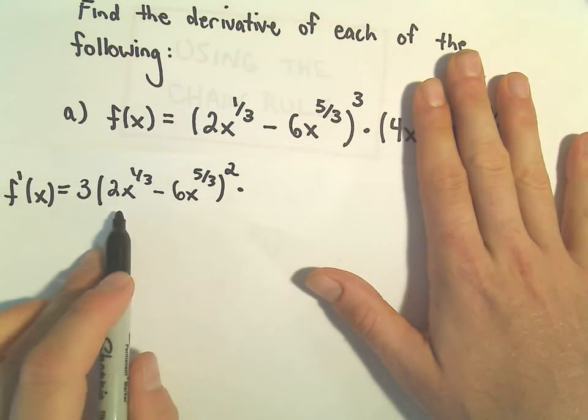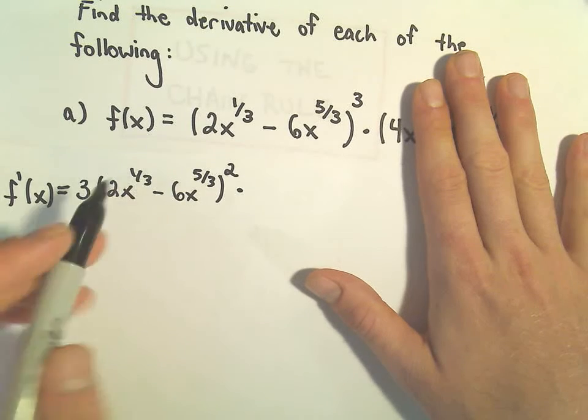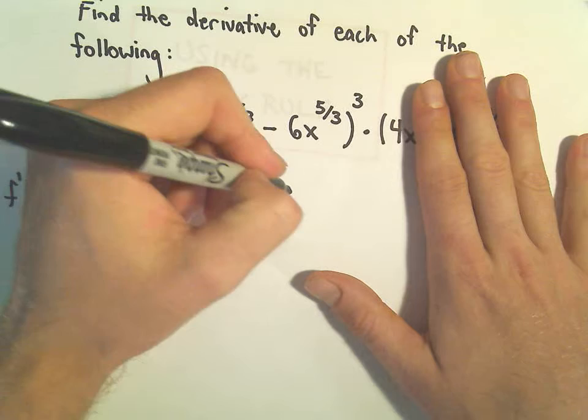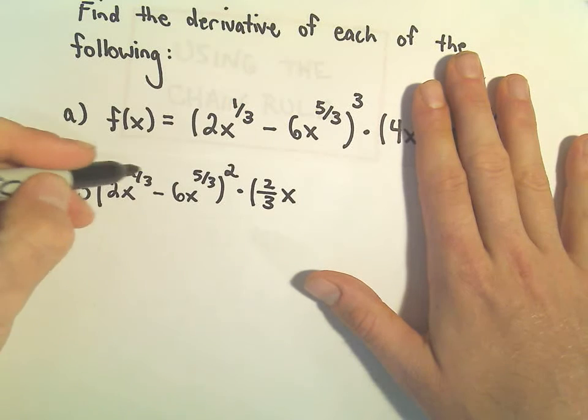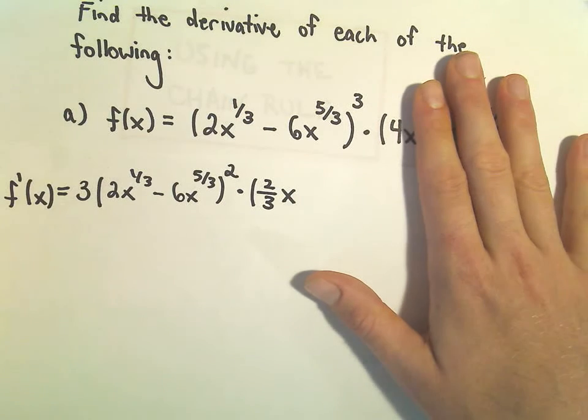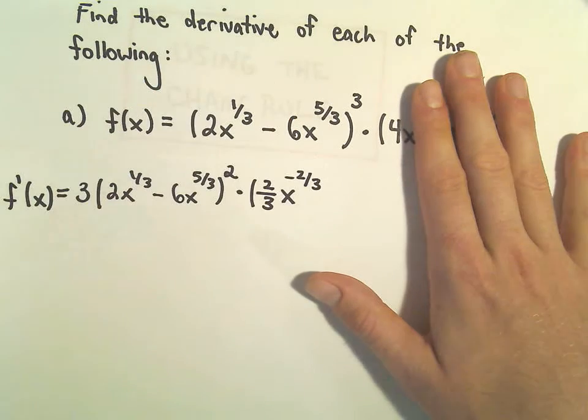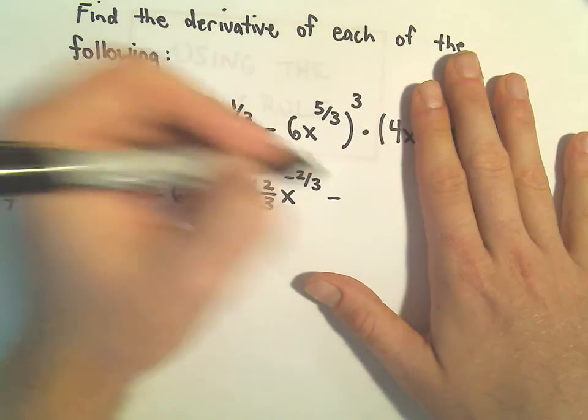The 1/3 would come out front and multiply by the 2, and that would give us 2 over 3x. We would have to subtract 1, so we're subtracting 3/3, which would give us negative 2/3.